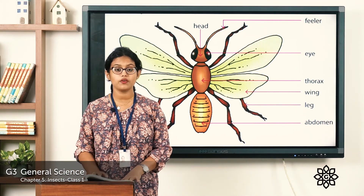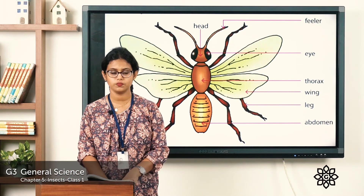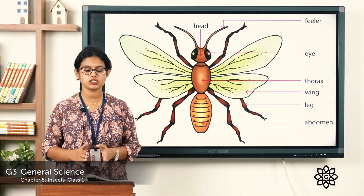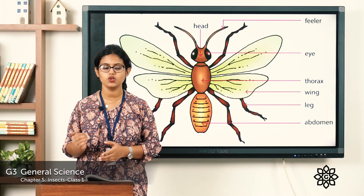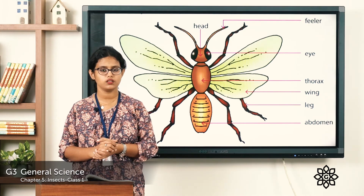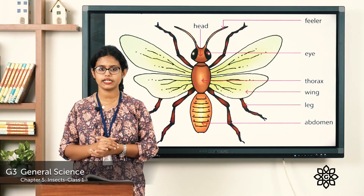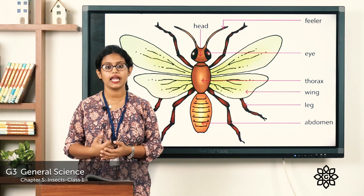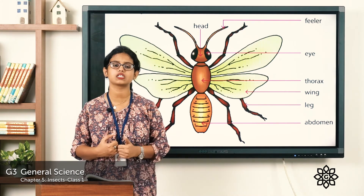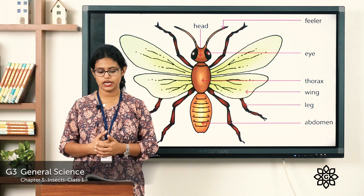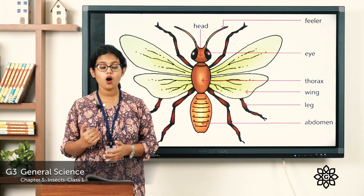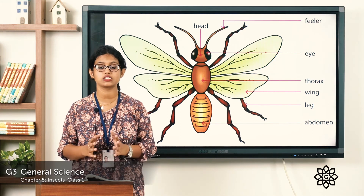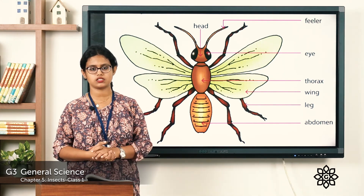Coming to page number 50, there is a question. Let's read and write the answer. The feelers help an insect to smell — tick yes or no. The answer is yes. The second question: all insects have four legs — the answer is no, insects have six legs.